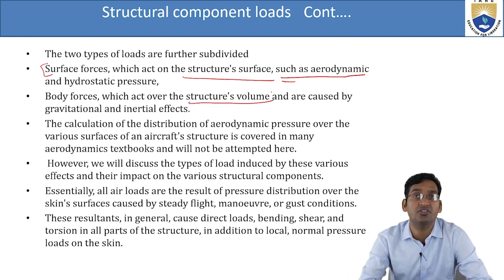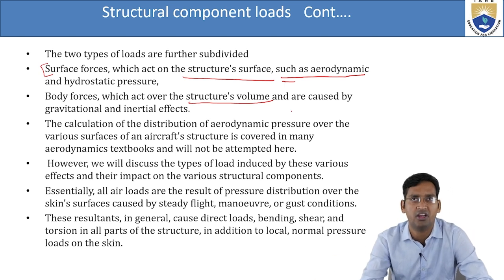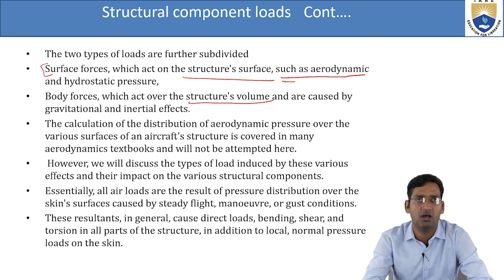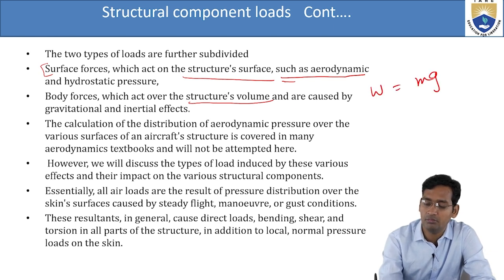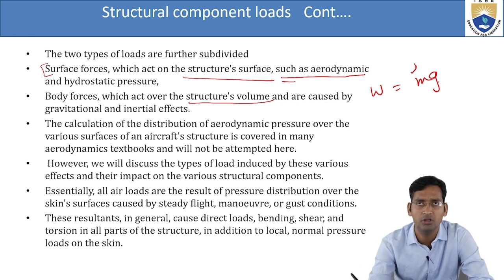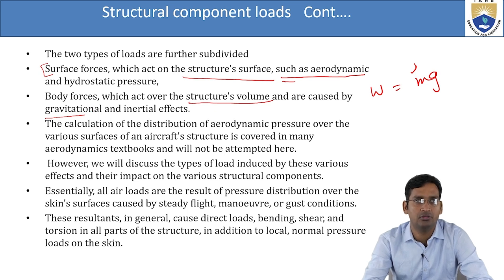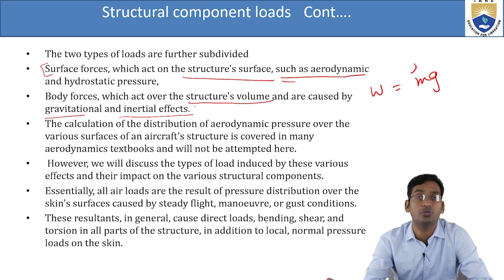The second type is body force, which acts over the structure's volume. Body forces are caused by gravitational and inertial effects. Gravitational means the total weight of the aircraft — W = mg, where mass times gravitational acceleration gives weight — which can be related to volume. Inertial effect is also present because of the volume, according to Newton's first law.